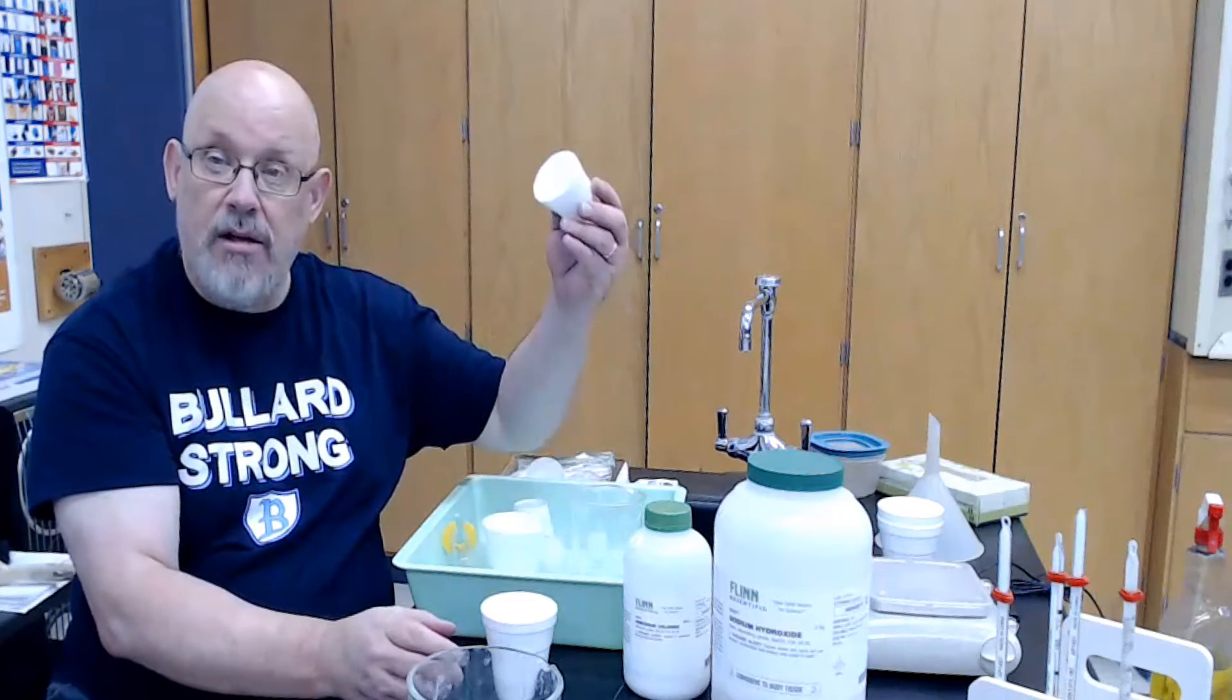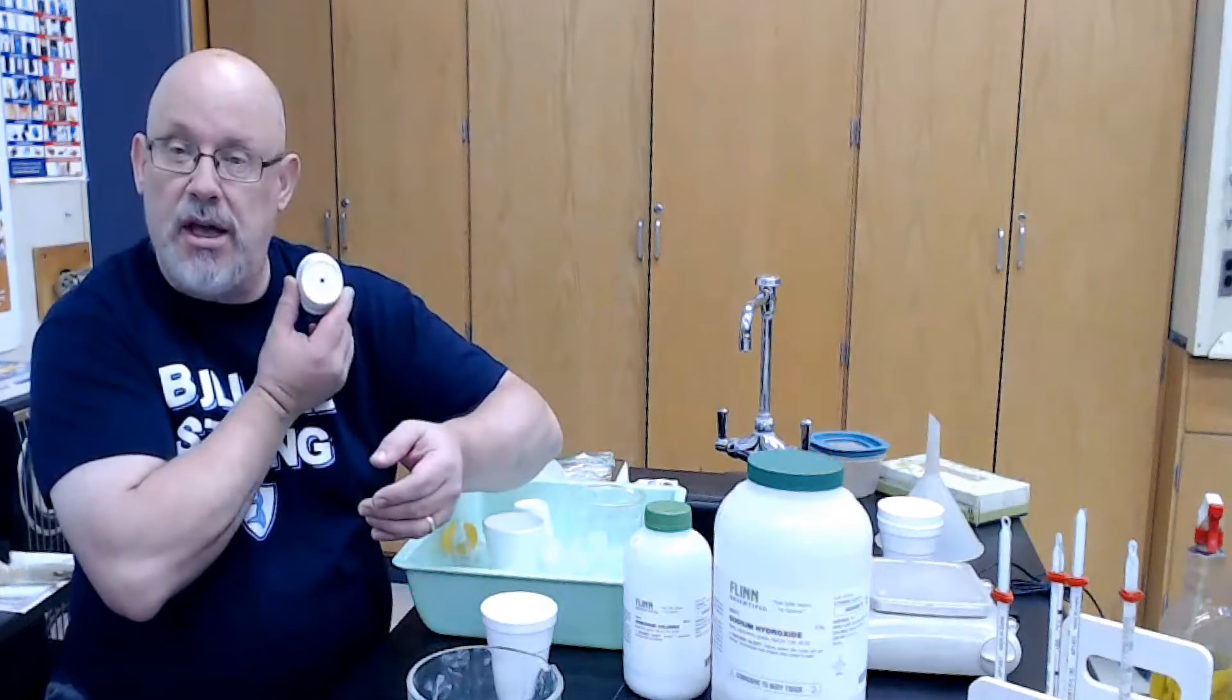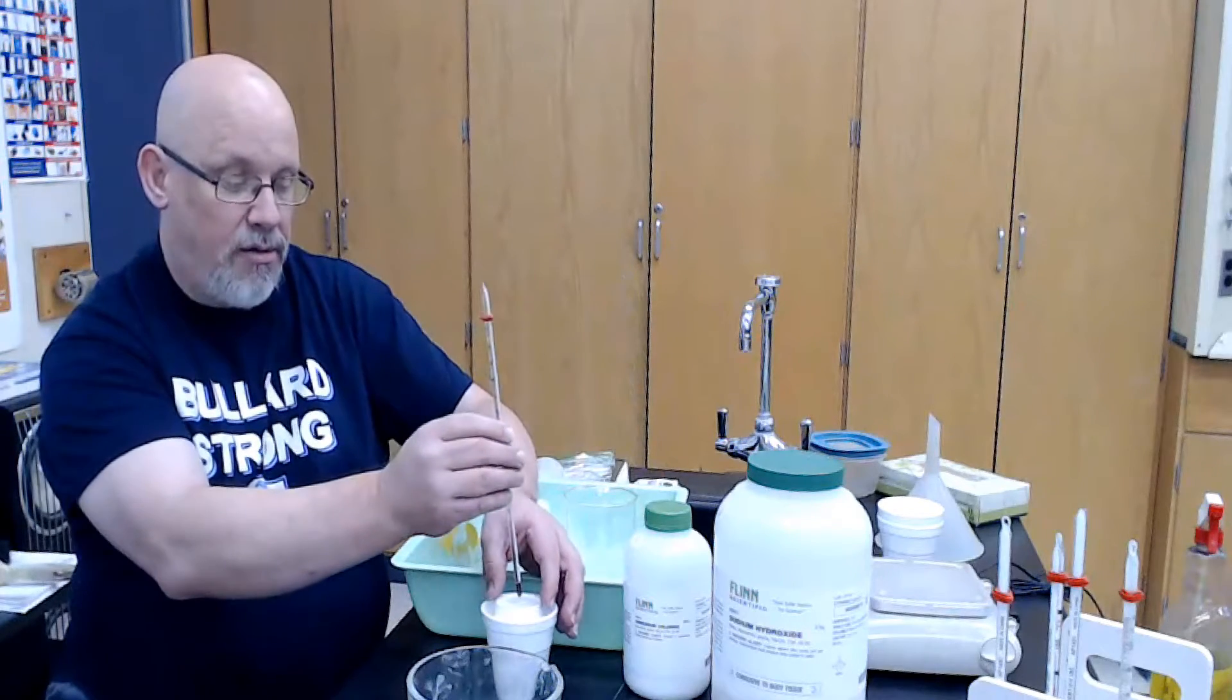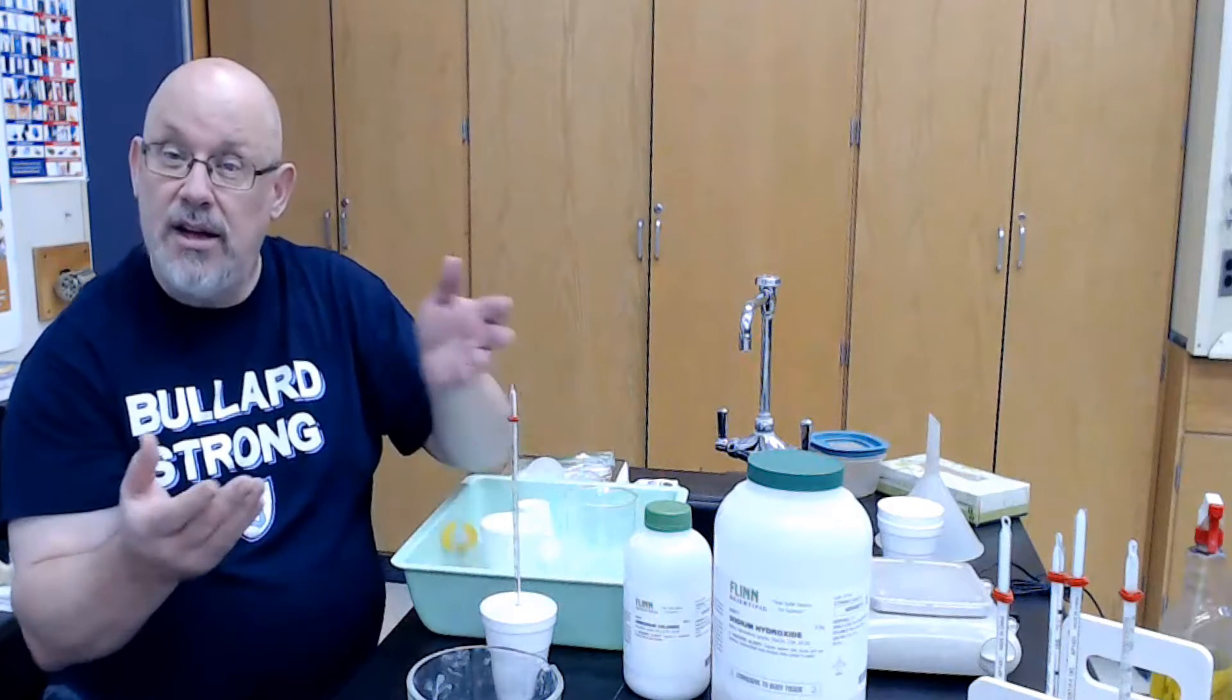The top of the calorimeter is another piece of a foam cup that's been cut short. And it has, as you can see, a little hole through which we can thread a thermometer. Now, before we do the reaction, we would measure the temperature of the water, the starting temperature, T sub i, the initial temperature.